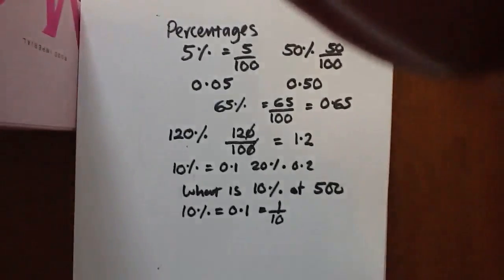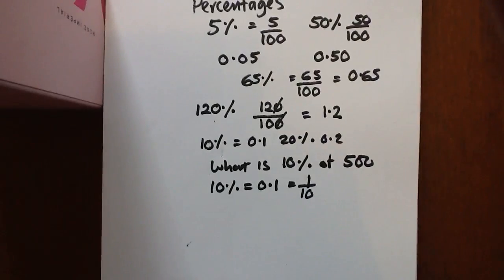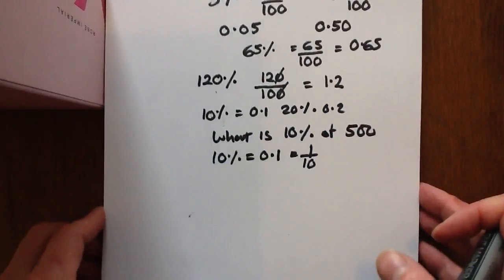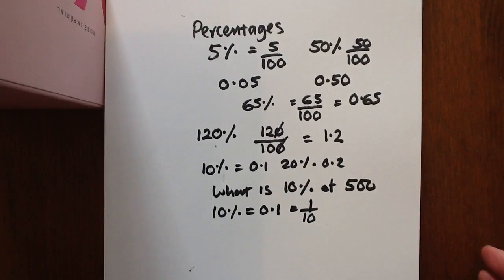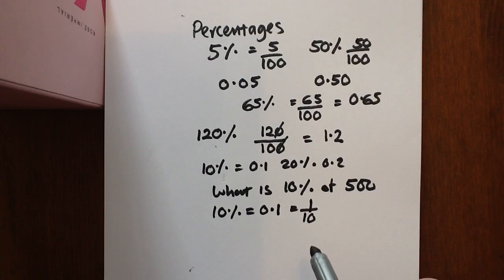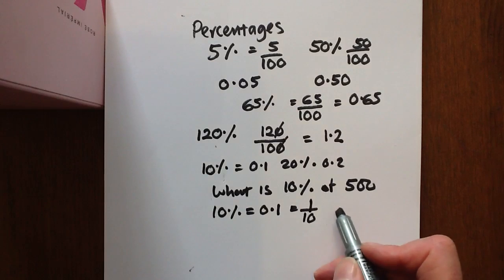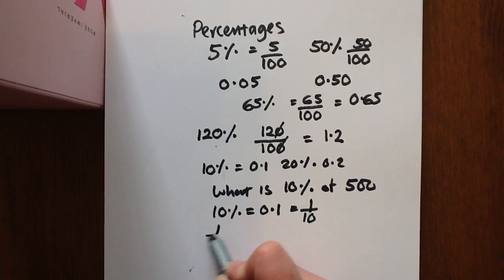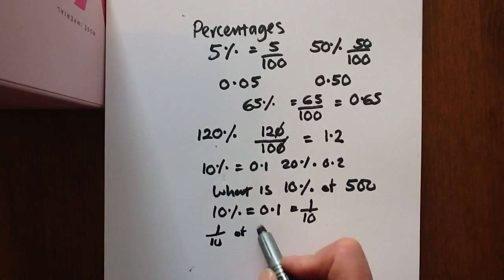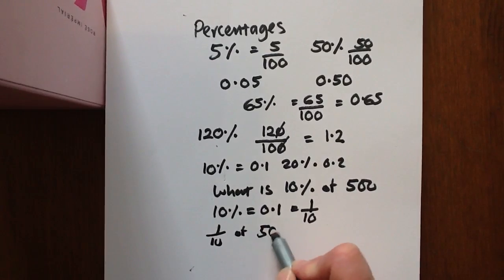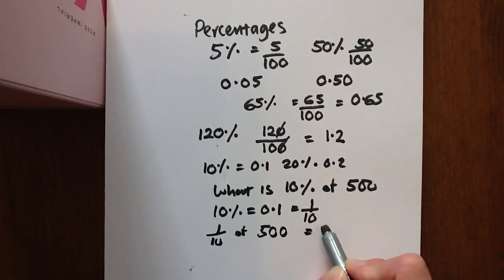I've just got this perched on an old champagne box — I bet that gave you a fright, gave me one! We'll finish this off as we've pressed on with it. So, 10% equals 0.1, which is 1 tenth. So 1 tenth of 500 — we simply take the 0 off at the end to get 50.